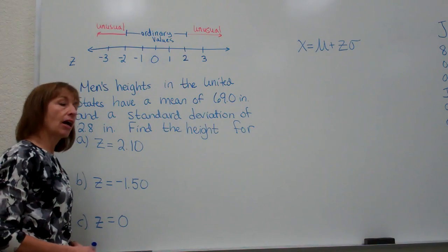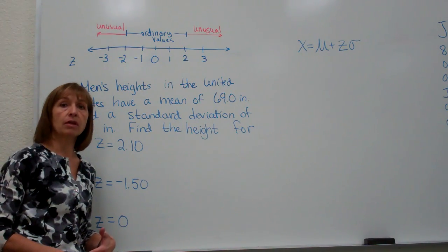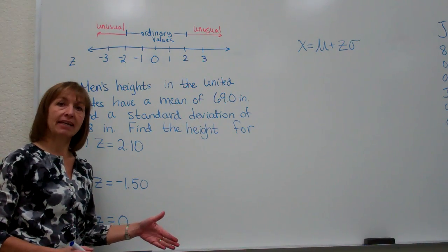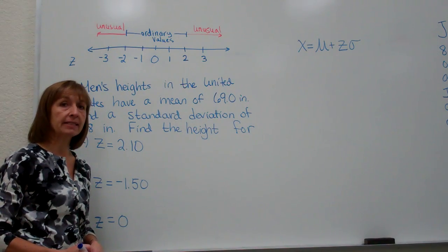Once we practiced how to take our raw scores and turn them into z-scores, remember z-scores are the values that tell us how many standard deviations a data value is away from its mean and in what direction away from the mean it is.